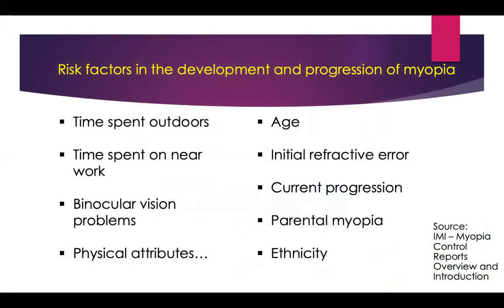Risk factors in the development and progression of myopia include time spent outdoors, time spent on near work, binocular problems, and other physical attributes. Age is a factor — for children it's a little bit more aggressive. Initial refractive error matters too: the higher the refractive error at the beginning, the more aggressive the progression. Other factors include current progression, parental myopia, and ethnicity.